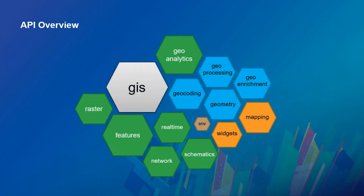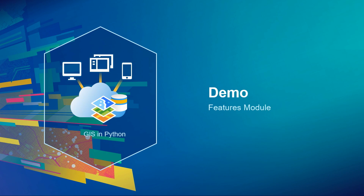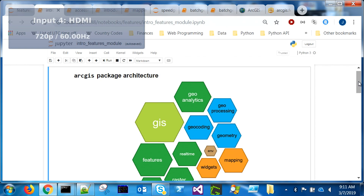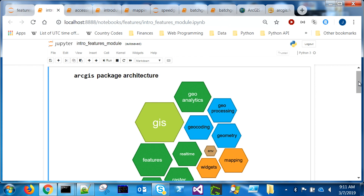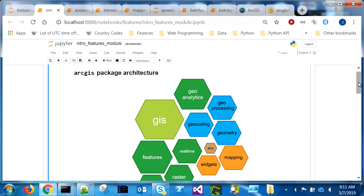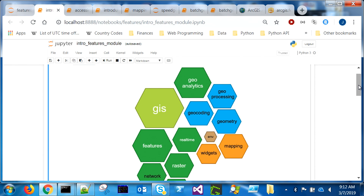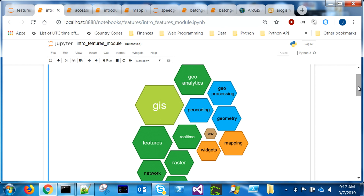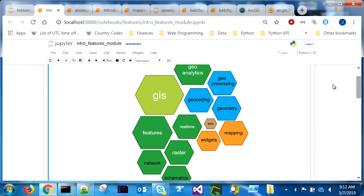Now we're going to move on and talk about the feature modules. John will take over. Hi, I'm John, and I'm going to talk about one particular module in the API — the features module. This is how you model your feature data within your web GIS. The API's architecture is modular in a Pythonic way, and the features module is one of the fundamental modules of data set architecture. There are processing modules and visualization modules as well.